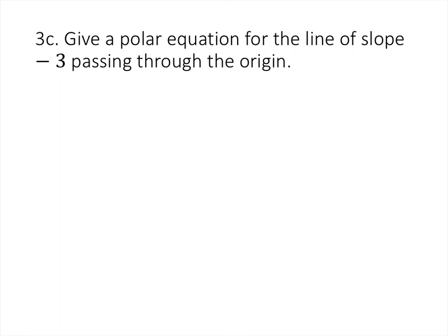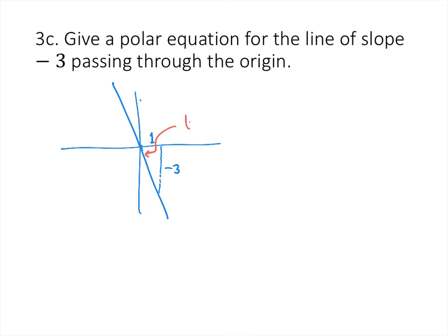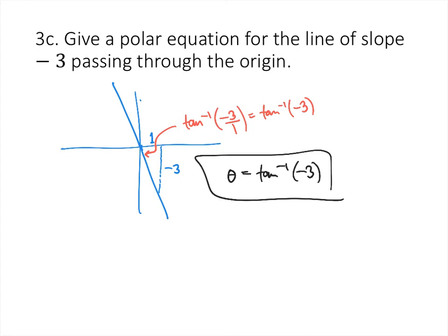For a line through the origin with slope -3, drawing the triangle gives a rise of -3 and run of 1. The angle is arctan(-3/1) = arctan(-3), which doesn't simplify to a nice value like π/3 or π/6 — it's just a decimal. So the polar equation is θ = arctan(-3), and sometimes we have to leave answers in that form.